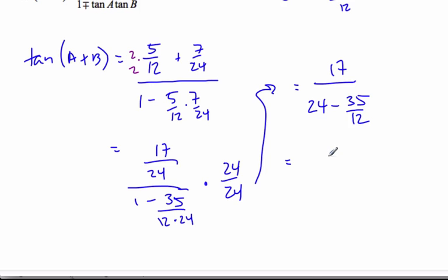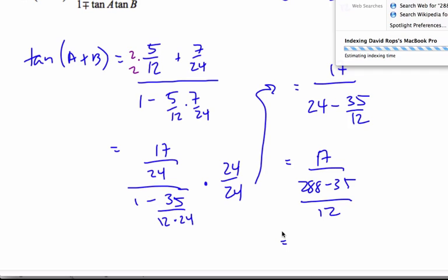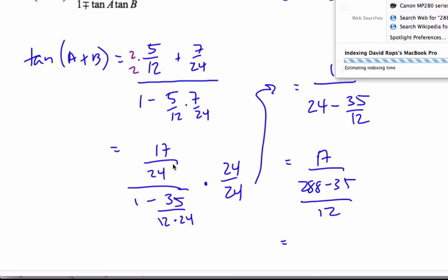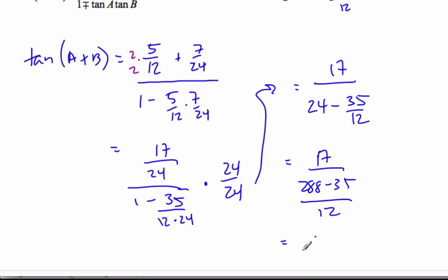Keeping going through here, I still have to get 24 times 12. 24 times 12 is 288. So I have 17 over 288 minus 35 over 12. With 288 minus 35 is 253.